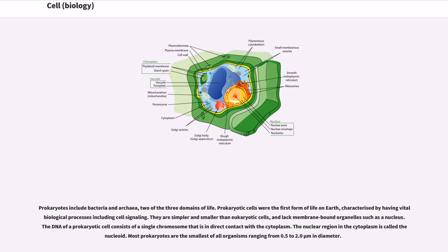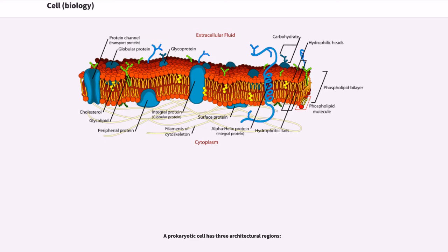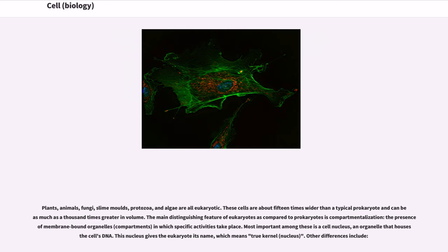They are simpler and smaller than eukaryotic cells and lack membrane-bound organelles such as a nucleus. The DNA of a prokaryotic cell consists of a single chromosome that is in direct contact with the cytoplasm. The nuclear region in the cytoplasm is called the nucleoid. Most prokaryotes are the smallest of all organisms ranging from 0.5 to 2.0 micrometers in diameter.